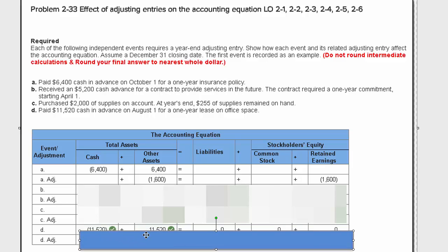Well, cash is going to decrease by $11,520. It says we paid it in cash. And we've got $11,520 increase in other assets. Why? Because we have prepaid rent being recorded. Prepaid rent represents future value to us. But it's being used up on an annual basis. So we have to adjust for this at the end of the year.